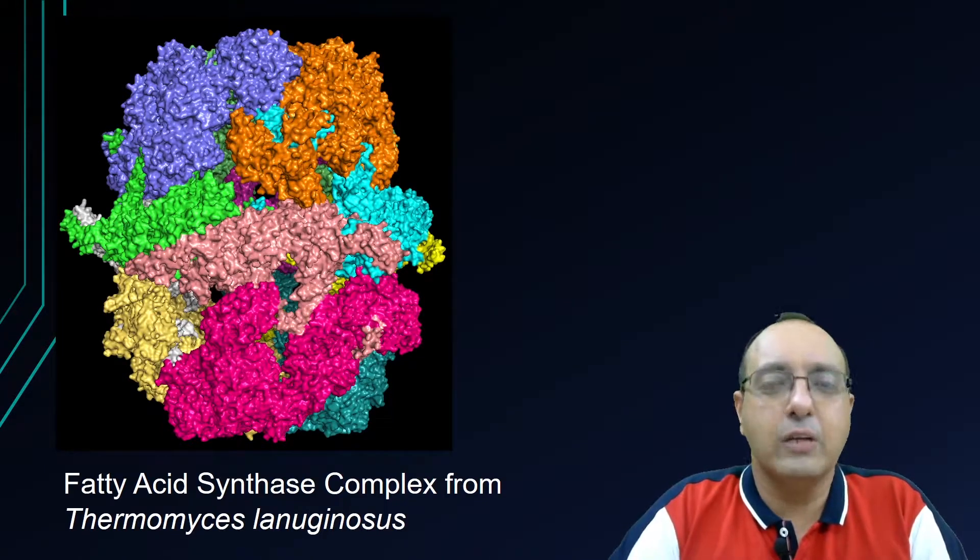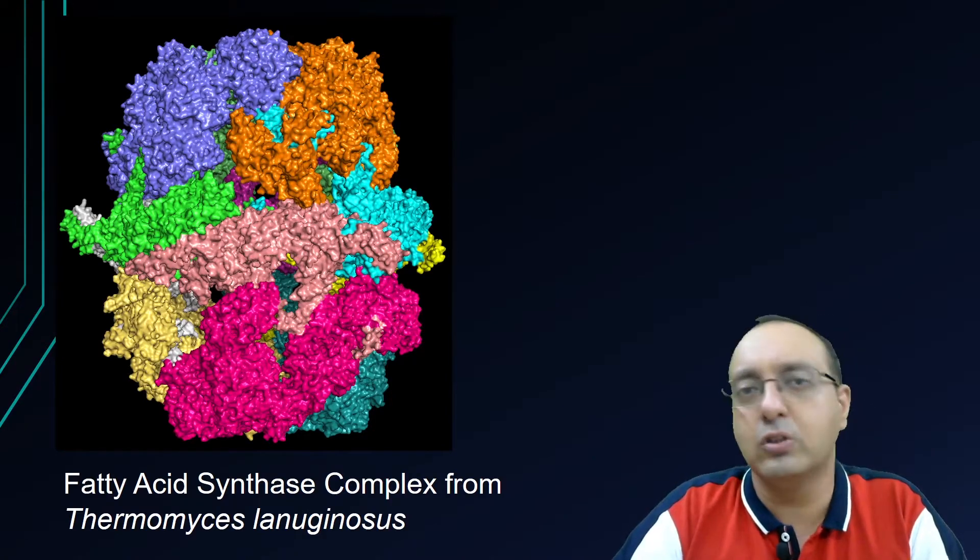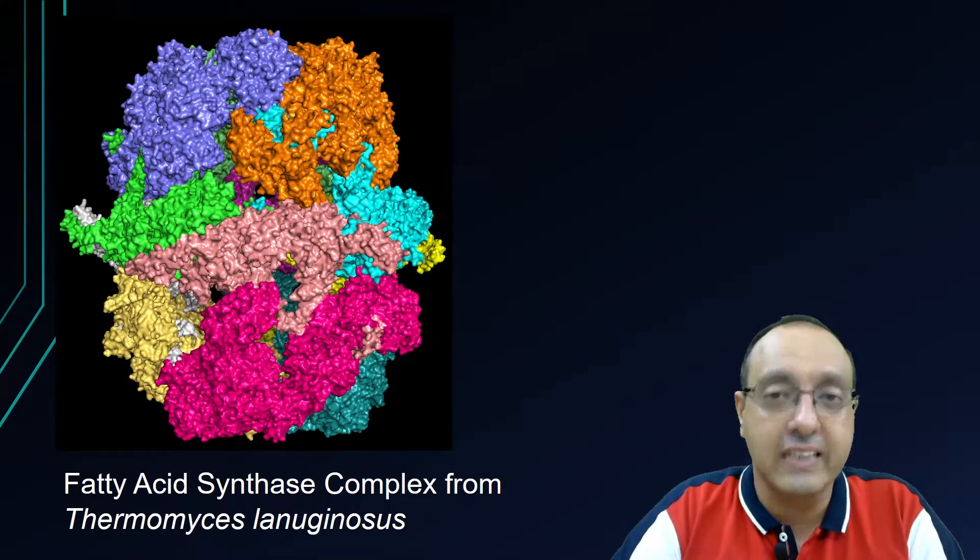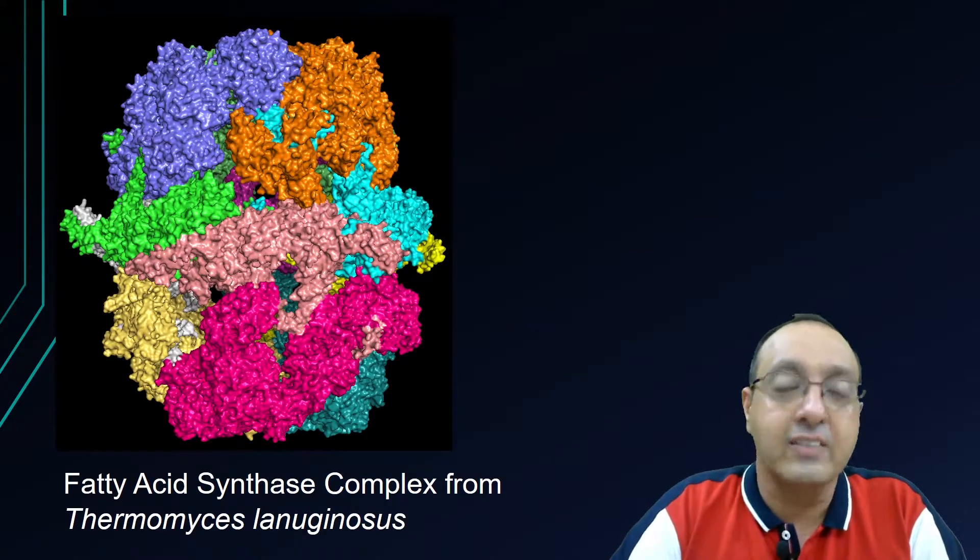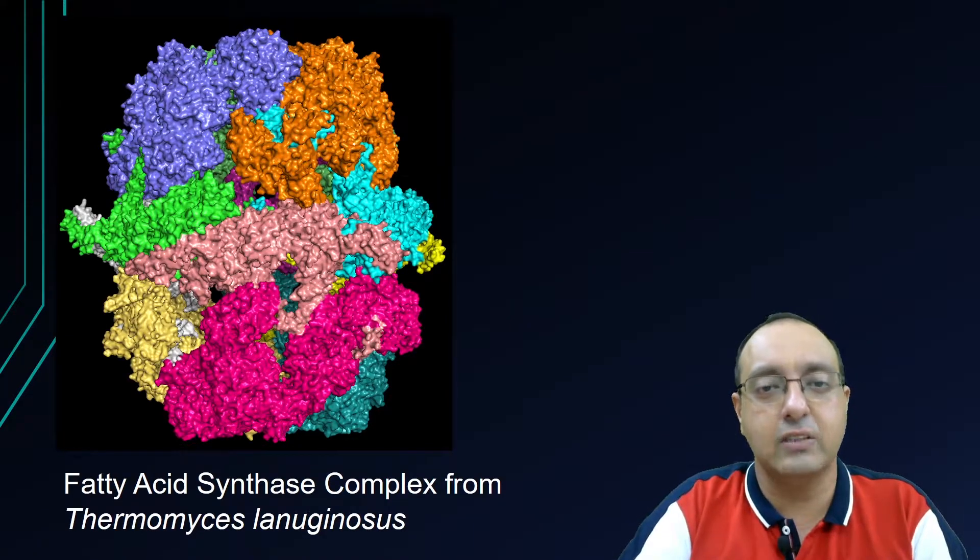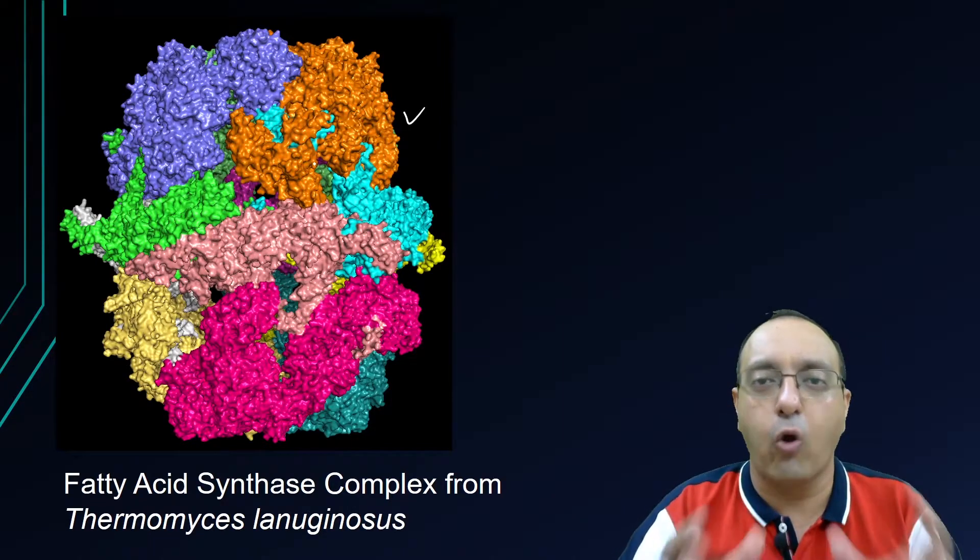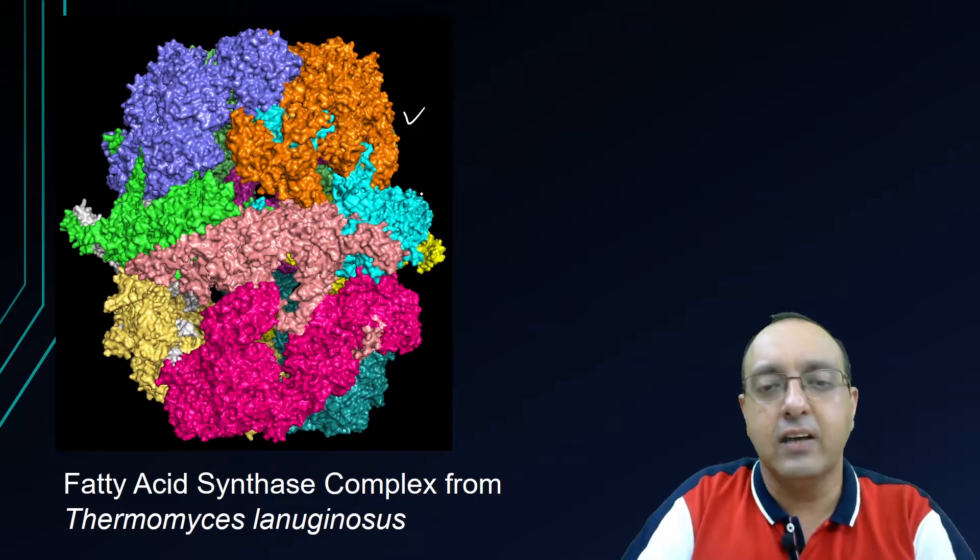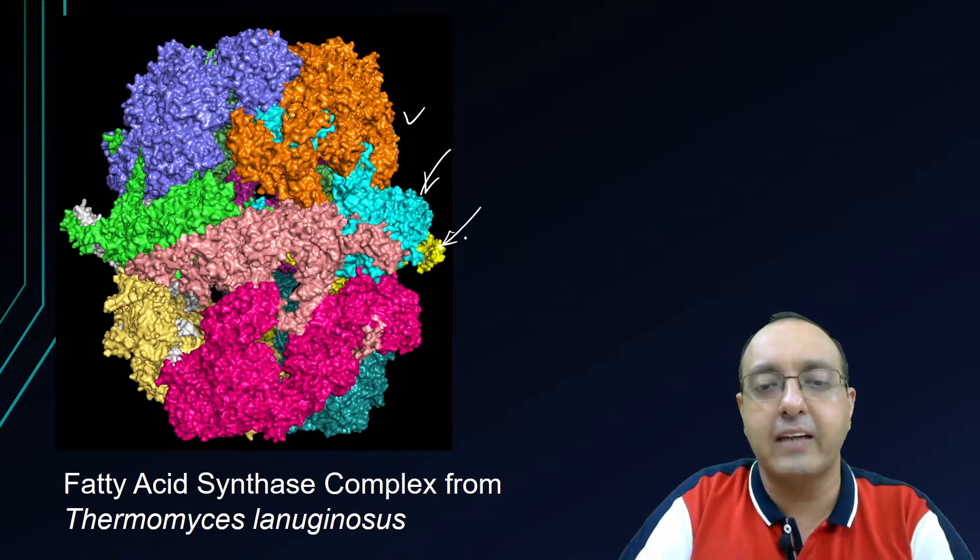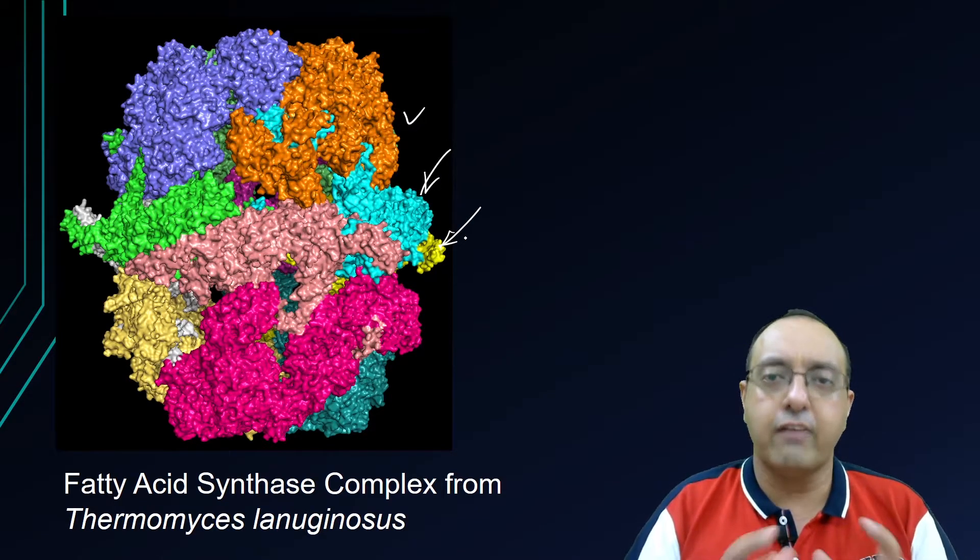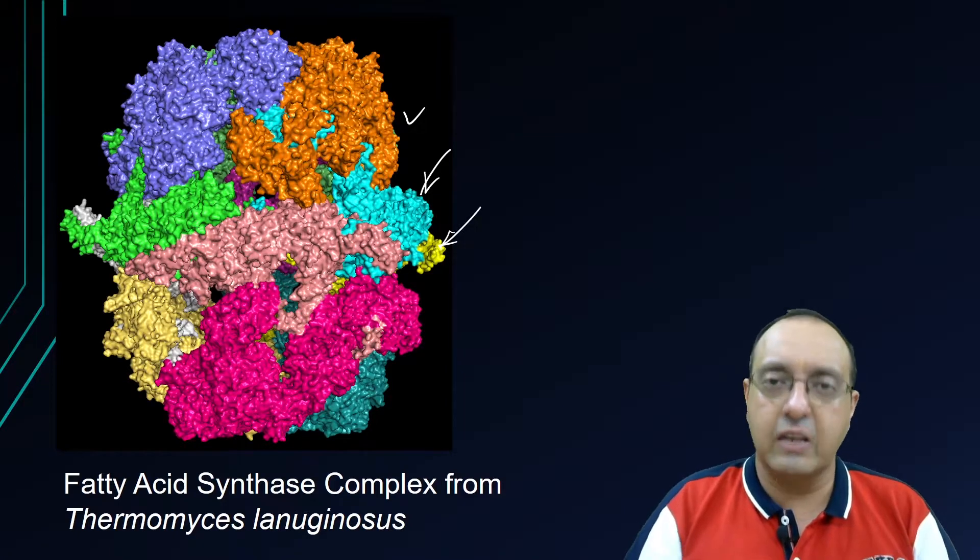We know that protein-protein interactions are crucial to functioning of the cell. Whether we are talking about membrane proteins, signaling pathway proteins, or enzyme complexes, as in this case, you can see fatty acid synthase complex. All these different colored blobs that you are looking at are different protein polypeptides coming together to form this fatty acid synthase complex, very important in lipid biosynthesis.